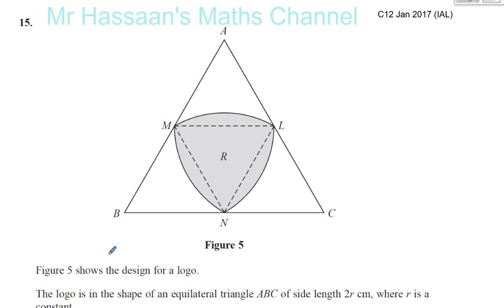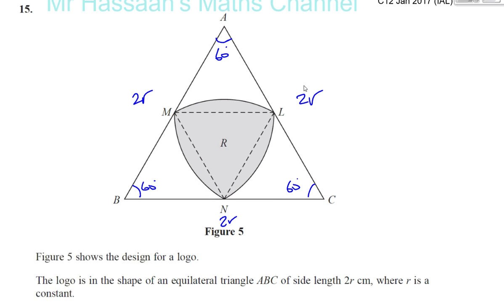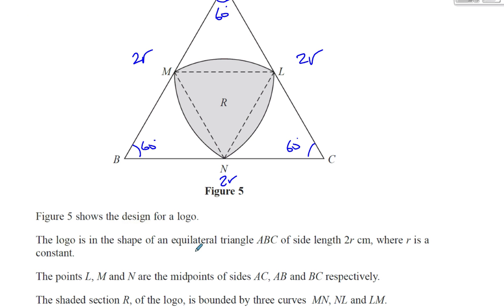Figure 5 shows the design for a logo. The logo is in the shape of an equilateral triangle ABC of side length 2R. So that's 2R, 2R, and 2R all the way across. And that's 60 degrees, 60 degrees, and 60 degrees — marking all the information we can from what we're given.